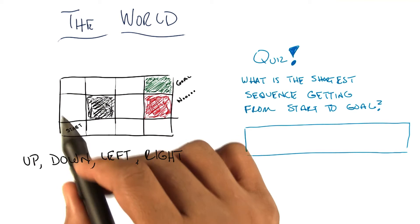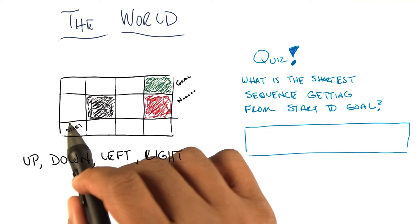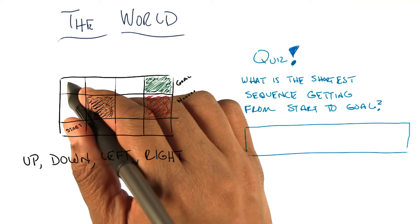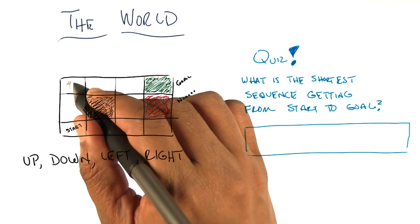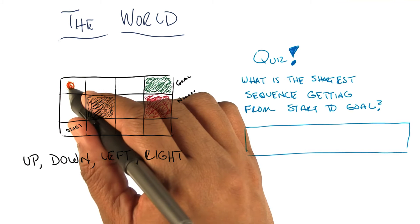Now, for this particular example, up does what you think it does, down does what you think it does, as do left and right. But if you find yourself at a boundary, such as right up here in this upper left hand corner, and you try to go up, you just stay where you are. If you try to go left, you just stay where you are.